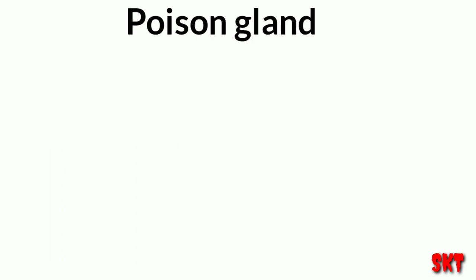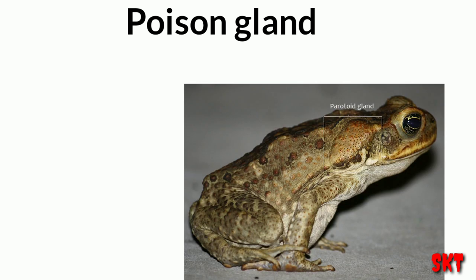The second one is the poison gland. These glands produce a poisonous liquid which creates disturbance for the predators.